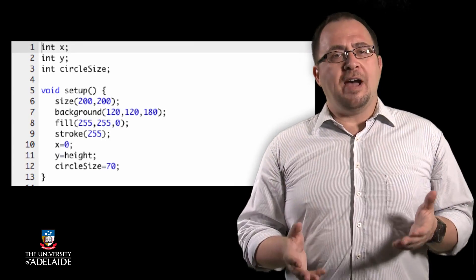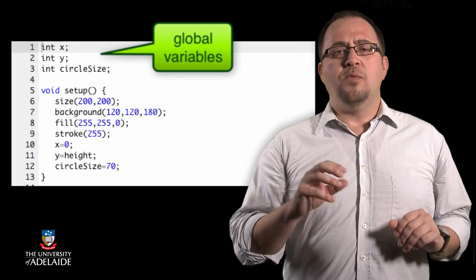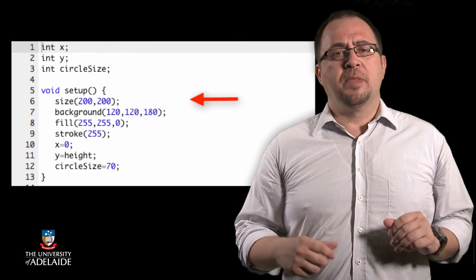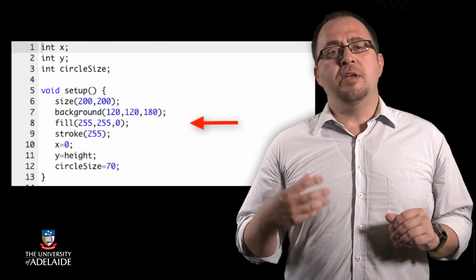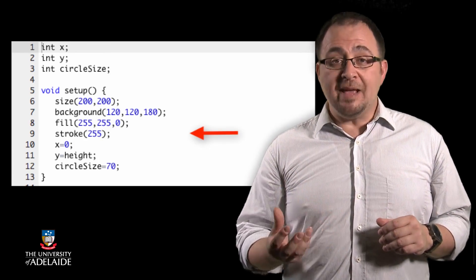Here we define three global variables, although we don't give them any values yet. Then we enter the setup method and set the size of the canvas, the background color, a bluish shade, the initial fill color of the sun, yellow.